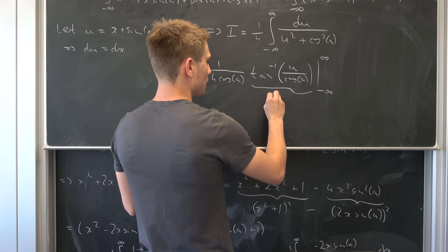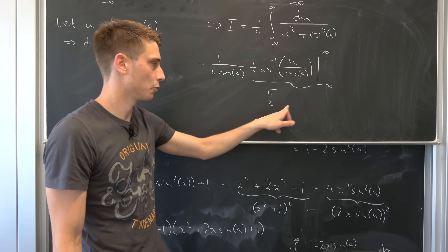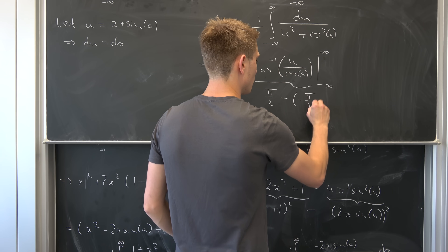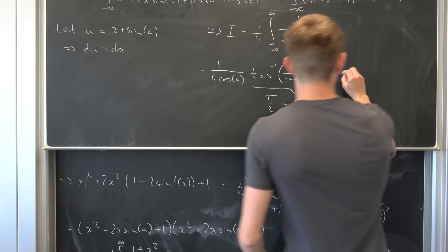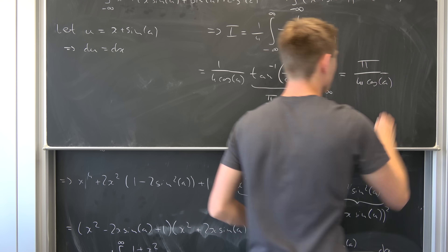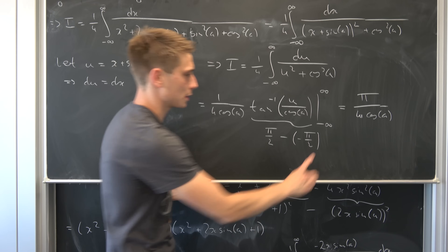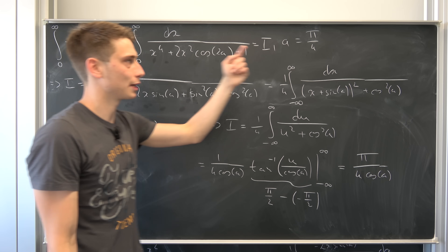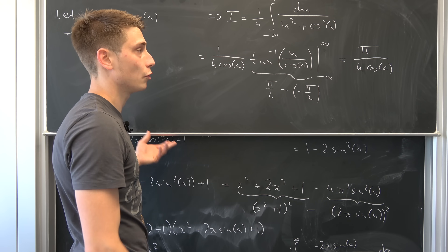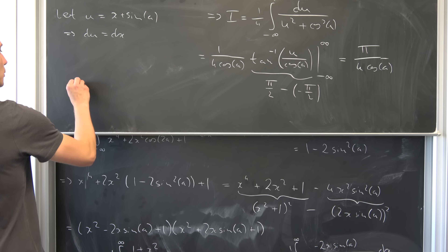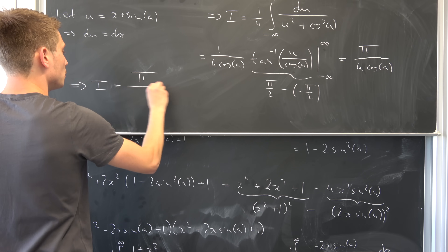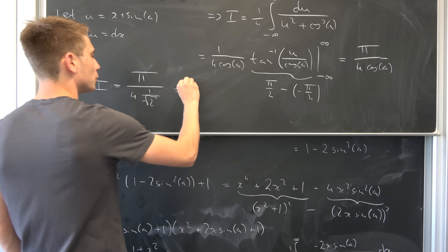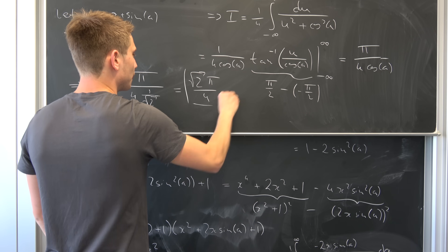We end up with pi over 4 times the cosine of a. But we're not completely done yet — that's the answer to this general integral, and we want the answer for the specific case. So let's plug in a = pi over 4 and see what we get. The value of cosine of pi over 4 is 1 over square root of 2. So I is pi over 4 times 1 over square root of 2. Taking the reciprocal, we end up with square root of 2 times pi over 4. And then we are done.